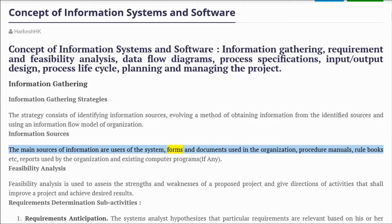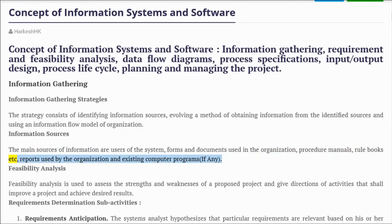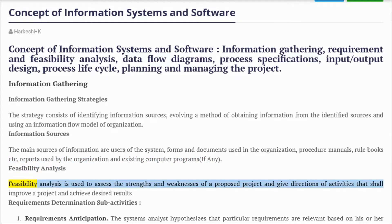The main sources of information are users of the system, forms and documents used in the organization, procedure manuals, rule books, reports used by the organization, and existing computer programs if any. Feasibility analysis is used to assess the strengths and weaknesses of a proposed project and give directions of activities that shall improve a project and achieve desired results.